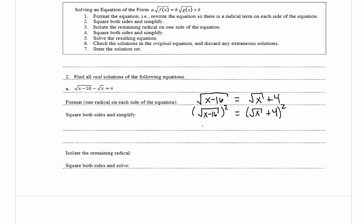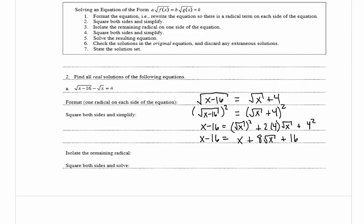The left side gives x minus 16. On the right we have a perfect square trinomial: the square root of x squared plus 2 times 4 times the square root of x plus 4 squared, which simplifies to x plus 8 times the square root of x plus 16. Now we isolate the remaining radical by subtracting x from both sides and subtracting 16 from both sides, giving negative 32 equals 8 times the square root of x.